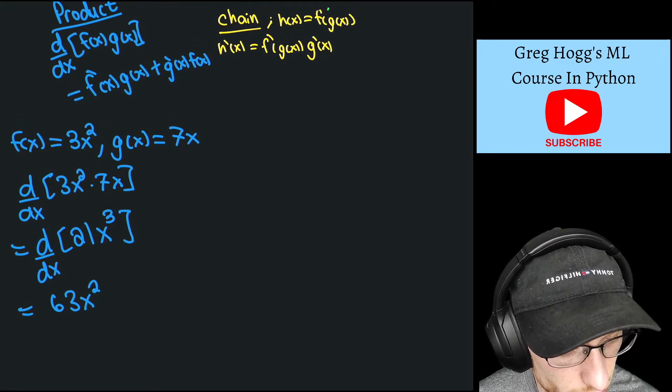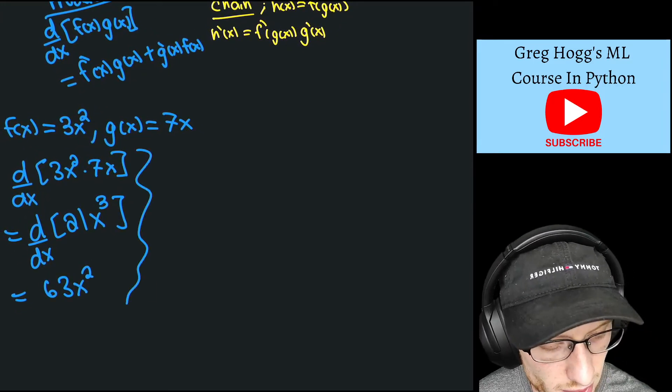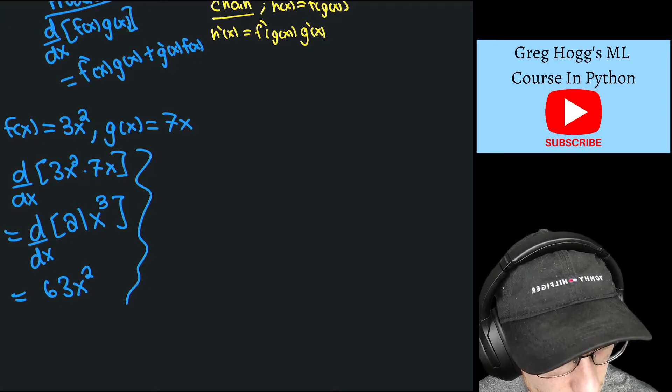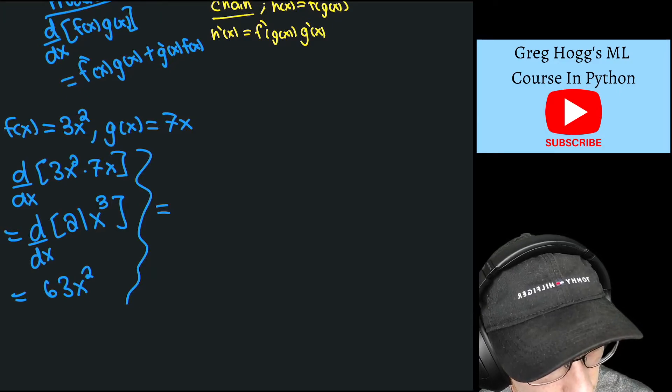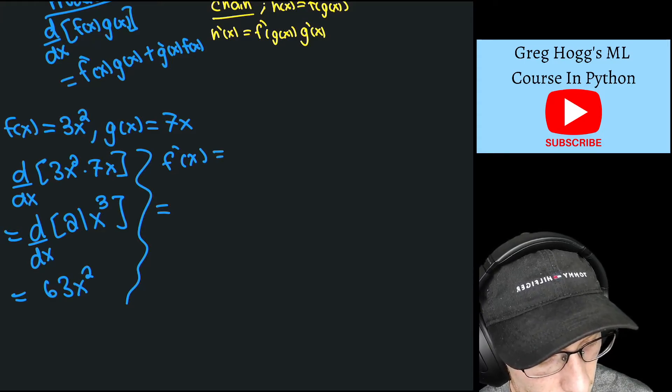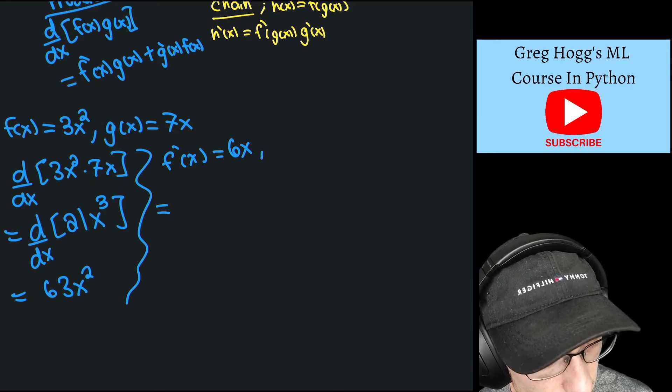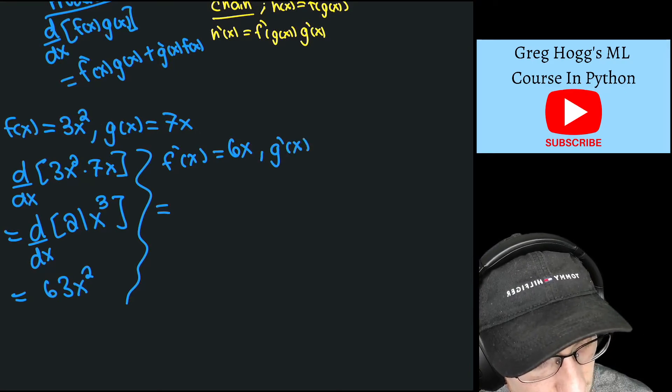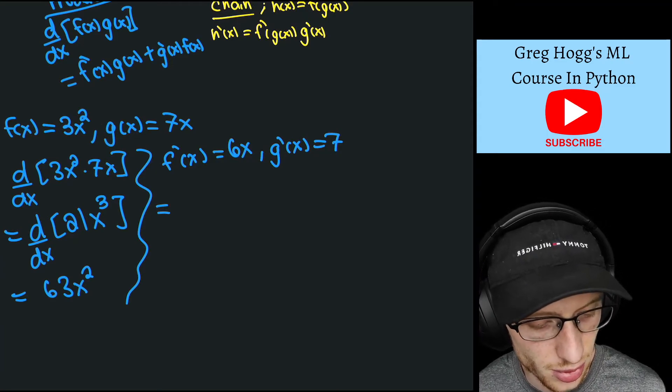Well, if you were to do it the product rule way, you would instead, and let me just split it here, this is the product rule way, is equal to, so instead we would have f'(x), so I'll need to calculate, so we have f'(x) is equal to 6x, right? And then g'(x), g'(x) is simply equal to 7, using our other rules.